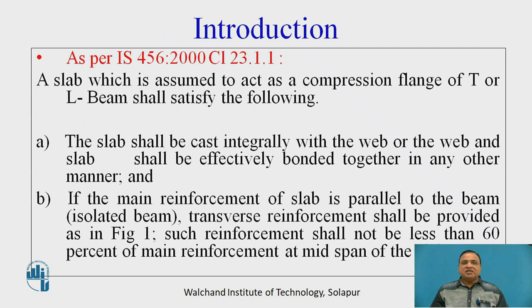Introduction: As per IS 456-2000, clause number 23.1.1, a slab which is assumed to act as a compression flange of beam, that is T or L-beam, shall satisfy the following.